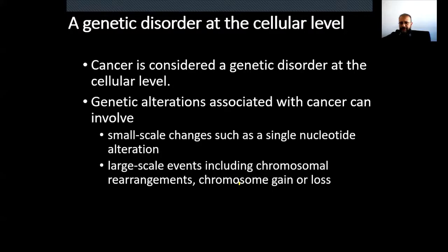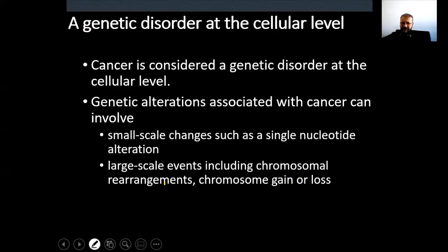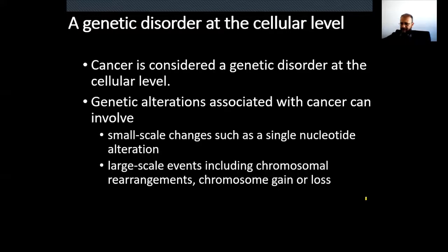We can see both groups of mutations in cancer cells: point mutations and chromosomal mutations. Point mutations can be single nucleotide changes (base substitutions), or small insertions and small deletions (indels). Cancer-causing mutations can also be large-scale chromosomal abnormalities including chromosomal rearrangements like translocations, or chromosomal gain or loss — gain of a whole chromosome (chromosomal duplication), loss of a whole chromosome, or deletion/duplication of a chromosomal segment.